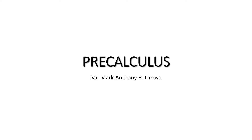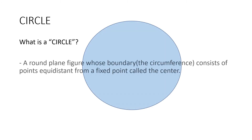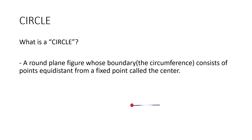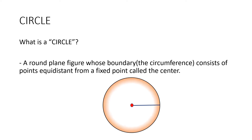I will be discussing circle with center at (0, 0). So what is a circle? A circle is a round plane figure whose boundary, the circumference, consists of points equidistant from a fixed point called the center. So that means, let's say we have a point and then we form a straight line, and if we move this line counterclockwise or clockwise, we will be able to form a set of points that is equidistant to our center — and that is what we call a circle.